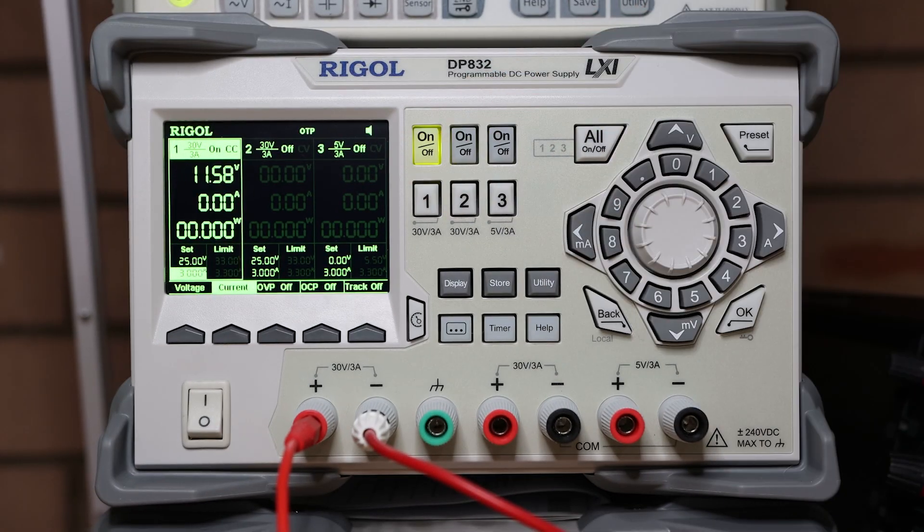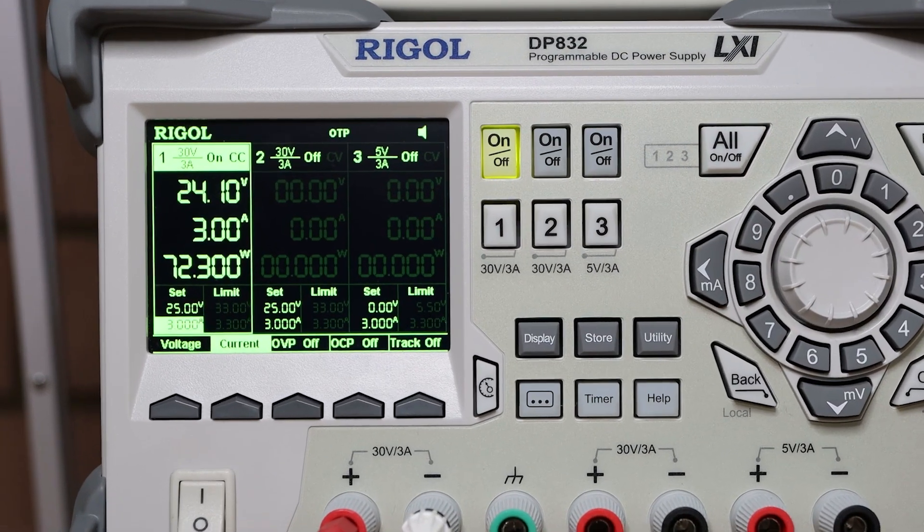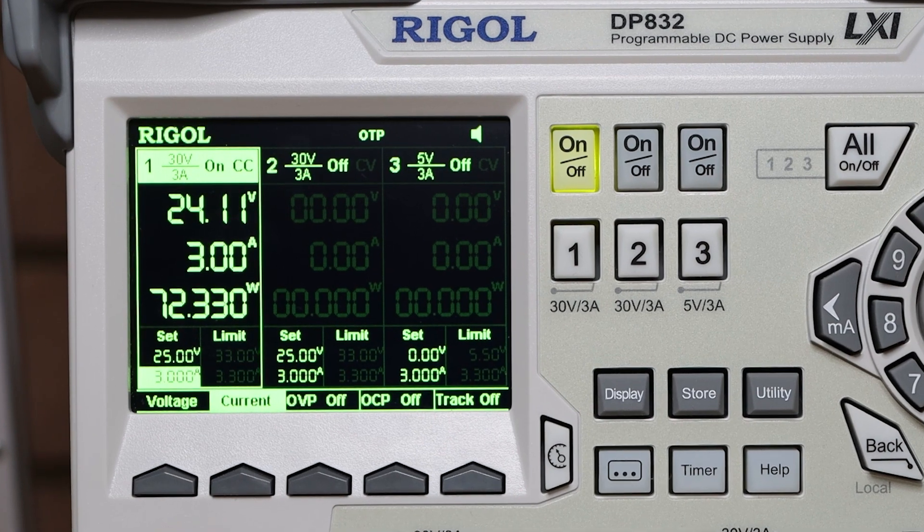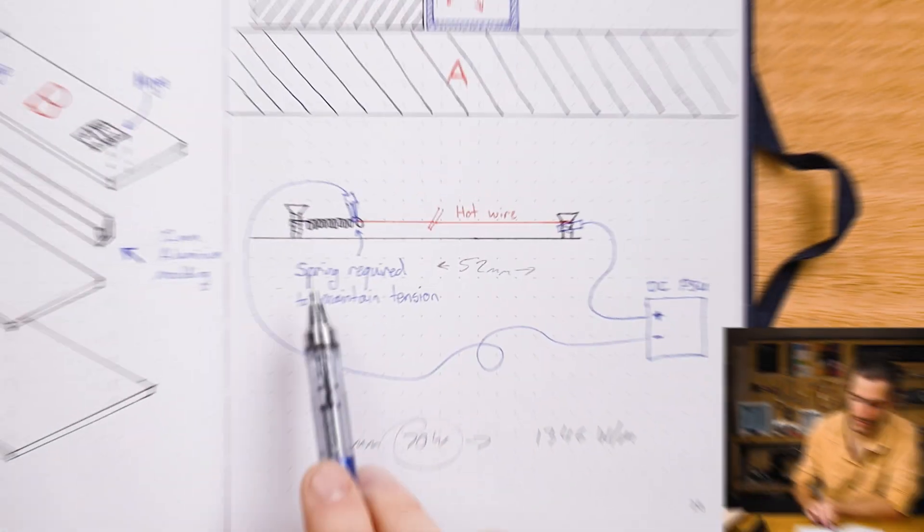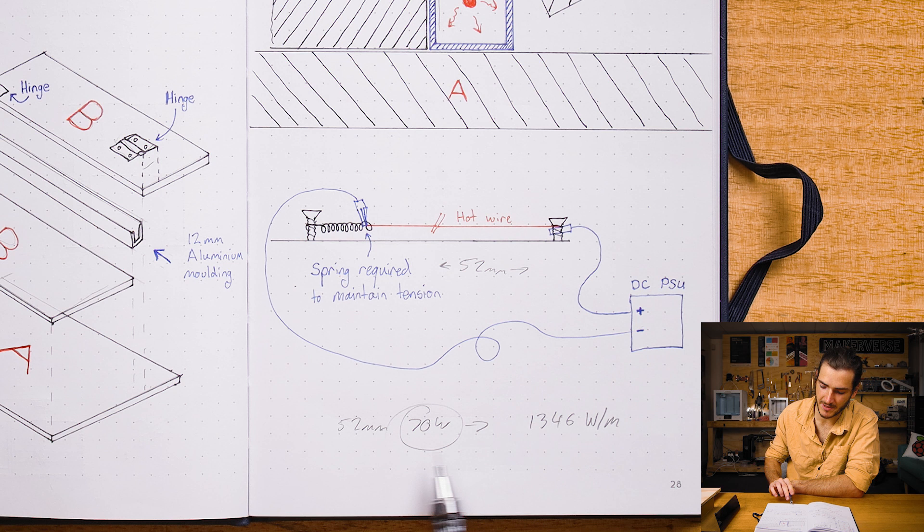I use my lab DC power supply running at about 25 volts and 3 amps over this run of wire, and that works out to be about 75 watts or 70 watts.